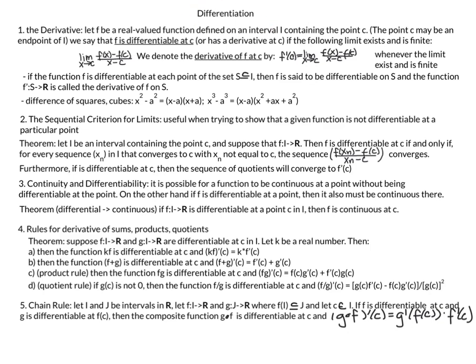In this video we will talk about differentiation. We will start by deriving what the derivative of a function at a point C is equal to using the formal definition. We will also look at a useful algebraic formula — the difference of squares, difference of cubes, and generalizations. We'll look at sequences and how they can determine if a function is differentiable at a point C, the relationship between continuity and differentiability, rules for derivatives of products and quotients, and the chain rule.